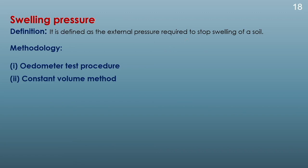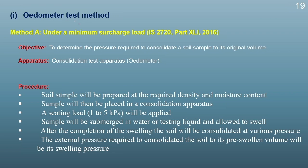This is all about the different methods available for determining the swelling potential of the soil. Next is the swelling pressure. The swelling pressure is the external pressure required to stop the swelling of a soil. There are two main methods: the odometer method and the constant volume method. Under the odometer method, the first approach is under a minimum surcharge load, which is the same as IS 2720 Part XLI 2016. The objective is to determine the pressure required to consolidate a soil sample back to its original volume using a consolidation test apparatus.